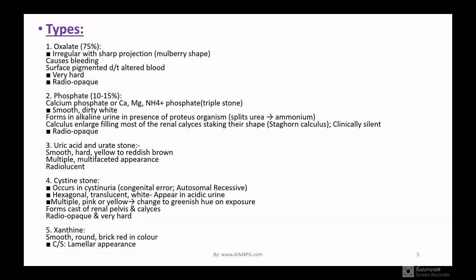Uric acid and urate stones are smooth, hard, yellow to red in color with a burnt color and multi-faceted appearance — these are radio-lucent, not radio-opaque. Keep in mind: uric acid and urate stones are radio-lucent. Cystine stones occur in cystinuria, an autosomal recessive condition. They are hexagonal, translucent white in acidic urine, and multiple; pink or yellow in color changing to green on exposure. They form casts of the renal pelvis and calyces, are radio-opaque, and very hard. Xanthine stones are smooth, round, red in color with a lamellar appearance.